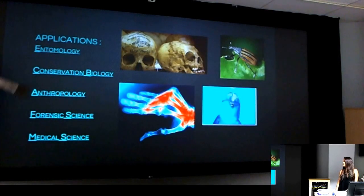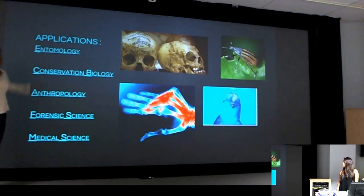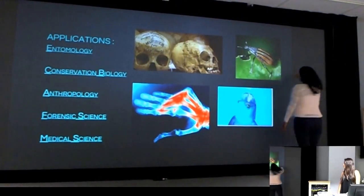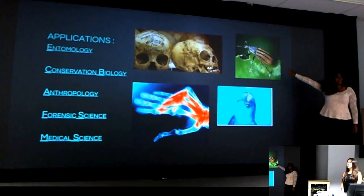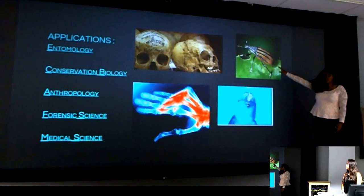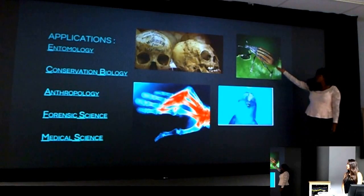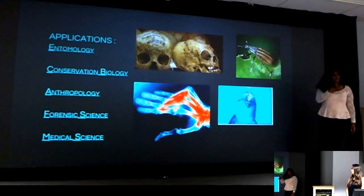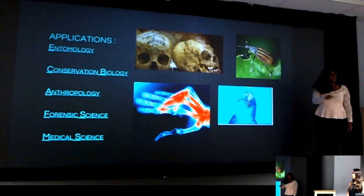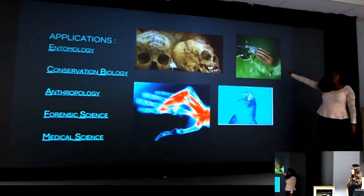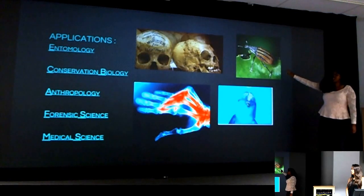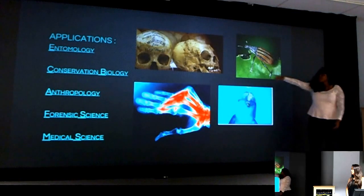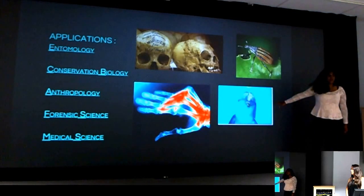Morphometrics has various applications. For instance, entomology — if I wanted to tell the statistical difference between different bug species in their own category, I could do that using shape analysis and Morphometrics. One particular application discussed in the lab is that one certain bug species has a specific shape in their mouth which makes them poisonous, while another species in the same category has a similar structure but isn't.